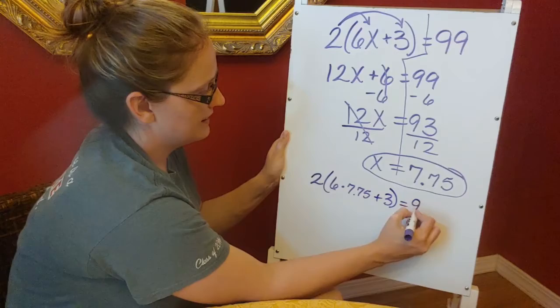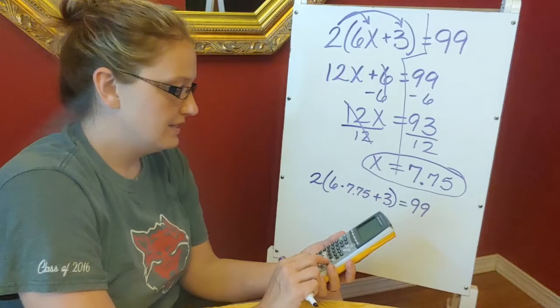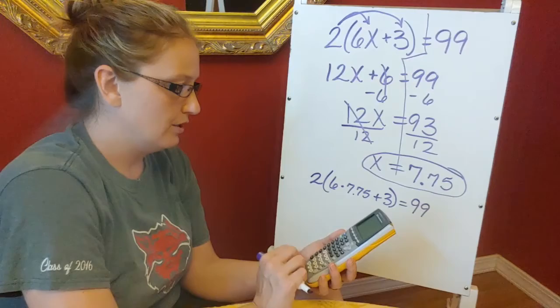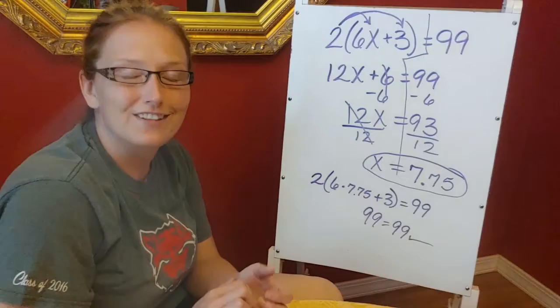So 2 times 6 times 7.75 plus 3, and I want to see if that's going to equal 99. For solving this part, I would just type it in your calculator: 2 parentheses 6 times 7.75 plus 3, close your parentheses and hit enter. Whenever you do that, you get 99. And so that answer checks out.